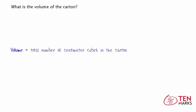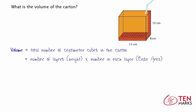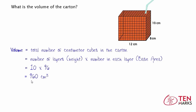What is the volume of the carton? We know that the volume is the total number of centimeter cubes in the carton. We just found the height — the number of layers — and we're going to multiply that by the number in each layer, or the base area. So that's 10 times 96, and that gives you 960 cubic centimeters. The volume of this juice carton is 960 cubic centimeters, or you can say that you can fit 960 cubes in this juice carton.